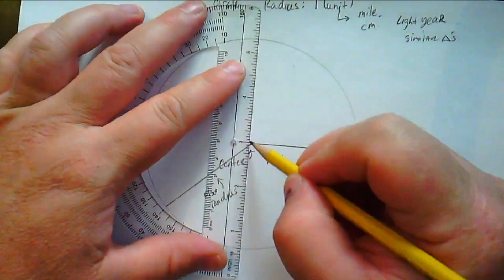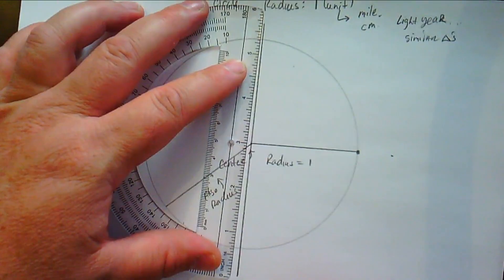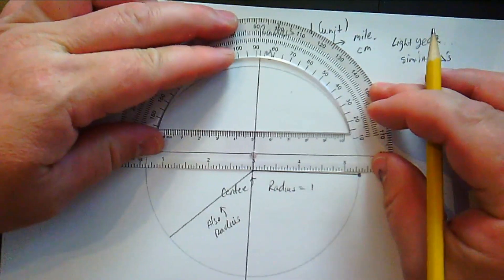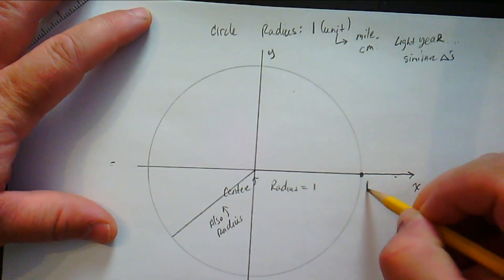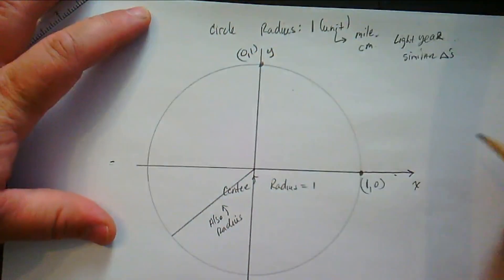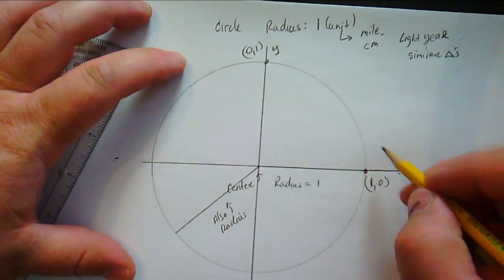Now, the unit circle is on a coordinate plane, and the center of the circle is at the origin. So we have the x and the y axes that go this way, right? So that makes the coordinate right there for those intersection points, one, zero, and zero, one.